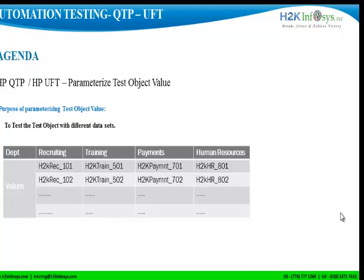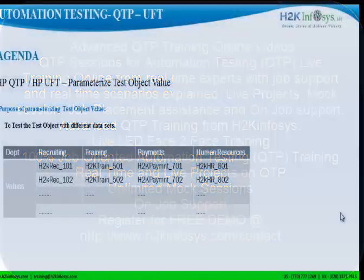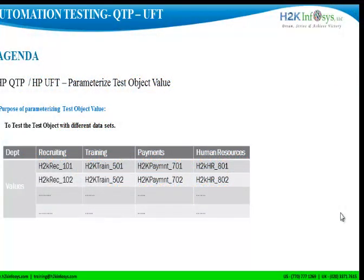In today's video, we are going to see how to parameterize a test object value. The purpose of parameterizing a test object value is to test the object with different data sets. For example, H2K has multiple departments — recruiting, training, payments, human resources — and every employee logs into the system every morning. The login process itself is the same, but every employee might have a different user ID.